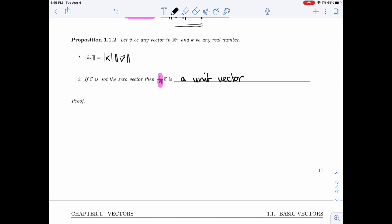Let's prove this. So let me start with point one. I want to figure out what the length of KV is. So I'm going to assume, let's assume that V is the vector, as usual, with components V1, V2, Vn.